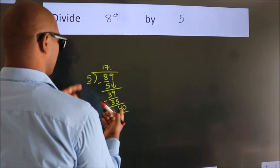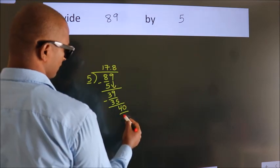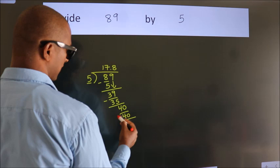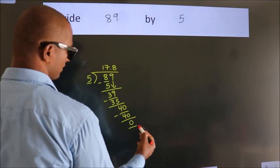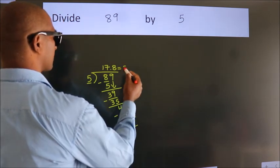When do we get 40? In 5 table. 5 eights 40. Now we subtract. We get 0. We got remainder 0. So this is our quotient.